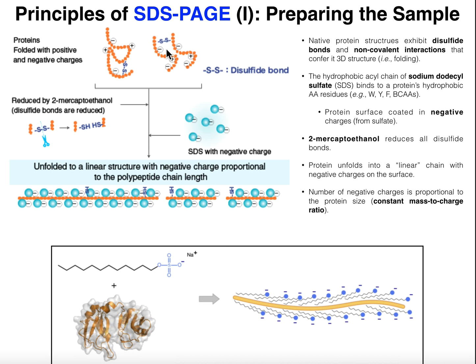Here we have some general native protein structures. Native protein structure means it's folded — all the correct interactions are there, giving it tertiary or quaternary structure in some cases. Those structures are caused by disulfide bridges, such as sulfur-sulfur bonds from two cysteine residues that are covalently bound. We also have non-covalent interactions such as ion-ion charges, like a negative aspartate residue with a positive lysine residue. If we're separating proteins, we need to get rid of both the disulfide bonds and these non-covalent interactions.